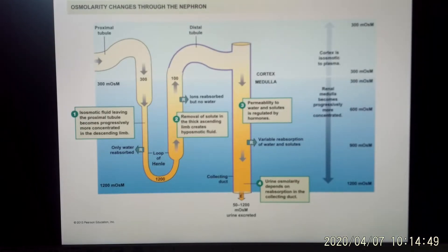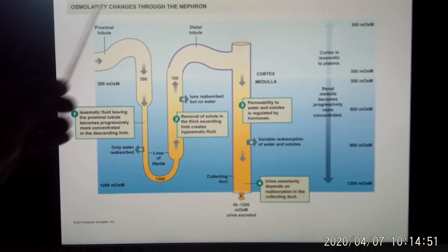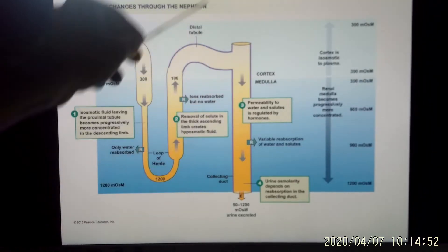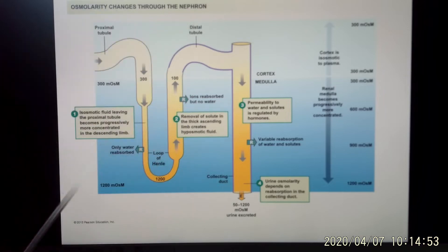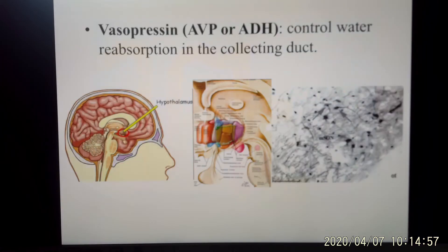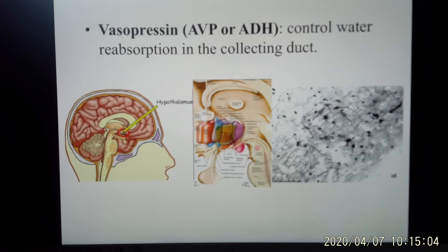Let's keep going and look at the hormones that regulate water reabsorption in the nephron. The hormone you are very familiar with is called vasopressin, also called ADH, antidiuretic hormone. You learned this neural hormone in unit one.